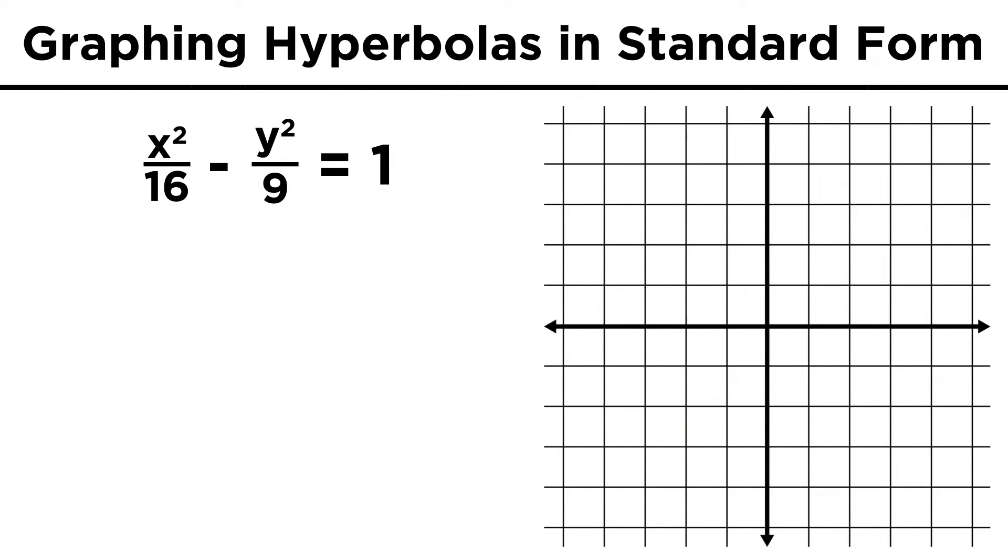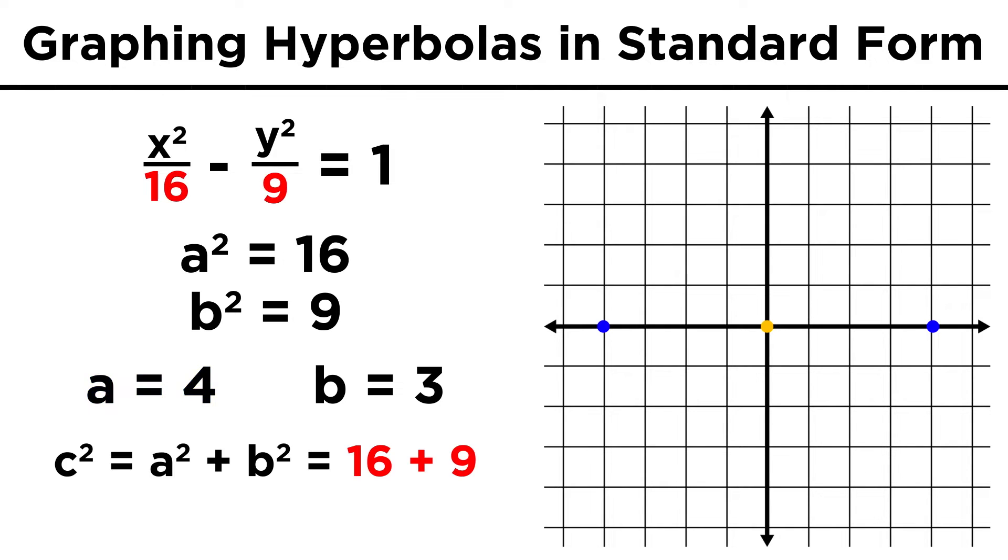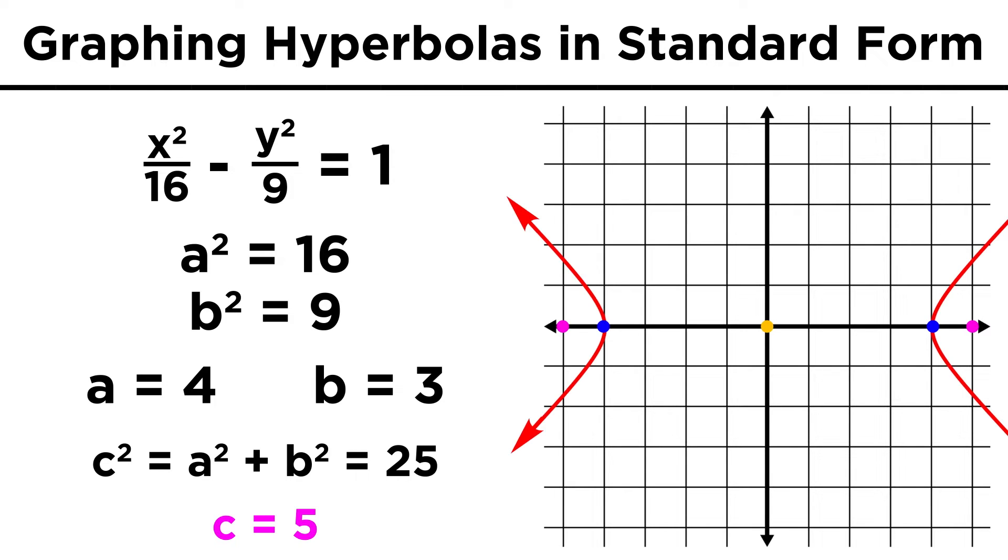Let's try an example. Here's an equation in standard form where a squared is sixteen and b squared is nine. A is the distance to a vertex, so the vertices must be at plus and minus four. Then we do c squared equals sixteen plus nine, or twenty-five, so c is five, and the foci must be at plus and minus five. And that's enough information to do a rough sketch of the hyperbola.